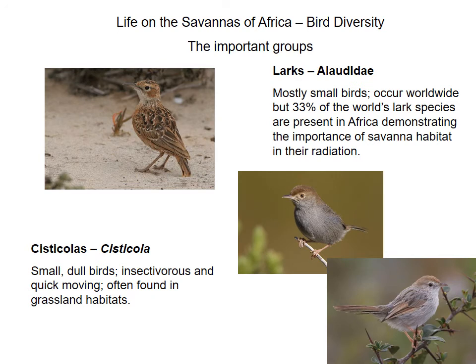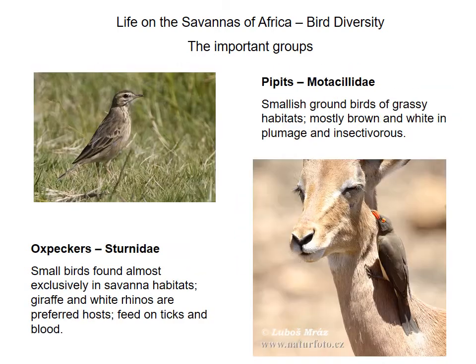Larks are small birds, with about a third of the world's lark species present in Africa, underscoring the importance of savannah habitat in their radiation and speciation. Another group of 'little brown jobs' are the cisticolas, very small generally dull birds that glean insects from bushes, found in grassland and savannah habitats across Southern Africa. Pipits are another group of dull-colored, small, mostly brown and white birds that are difficult to identify in the field but relatively common in savannah habitats, generally living in grassy areas.